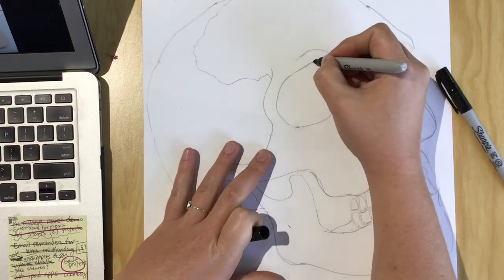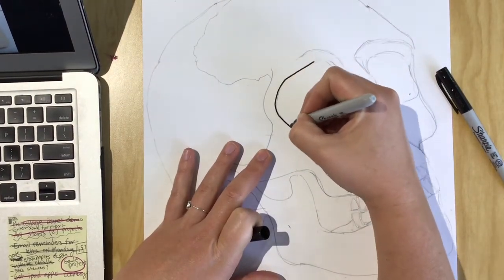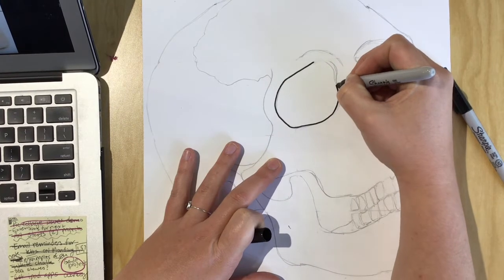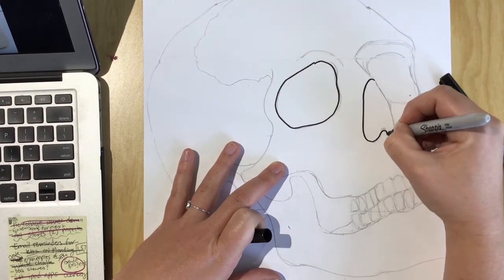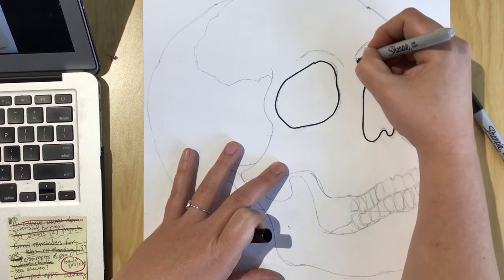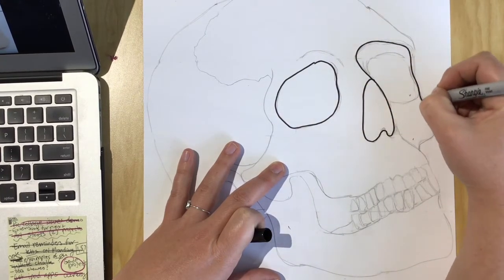So, you know, it's kind of going to be up to you. But I want to make sure that I'm really happy with my drawing before I outline. The reason we're outlining in Sharpie is because the technique we're going to do requires water.